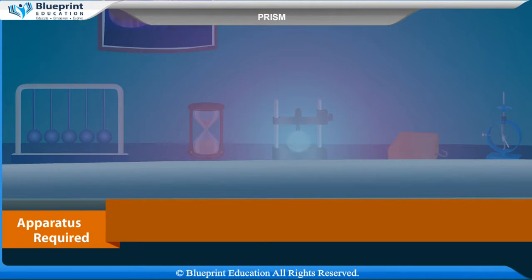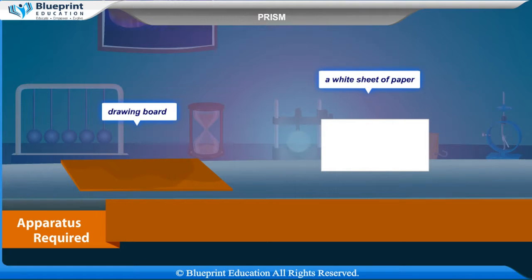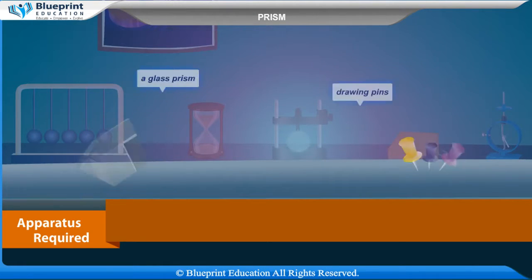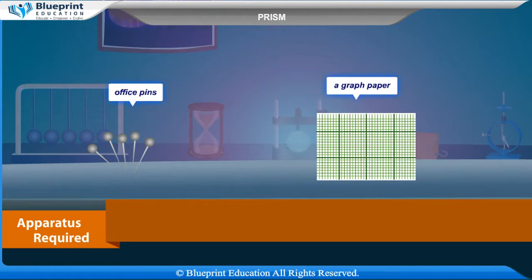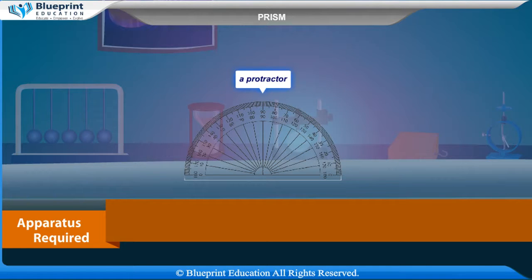Apparatus required are drawing board, a white sheet of paper, a glass prism, drawing pins, a pencil, half meter scale, office pins, a graph paper and a protractor.